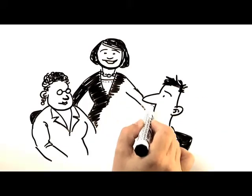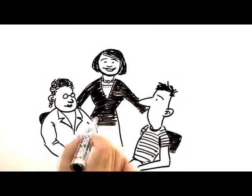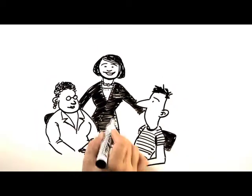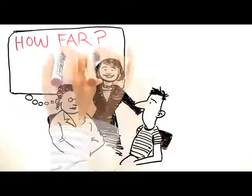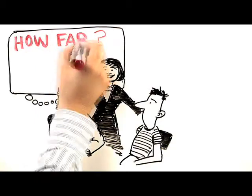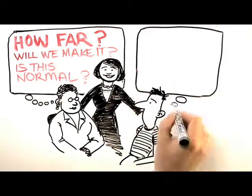The business users often still have to do a whole bunch of mental arithmetic when looking at the output, before they can actually answer the question in their heads. How far are we off target? If we keep going at the same pace, will we make it? Is this normal for this time of year?